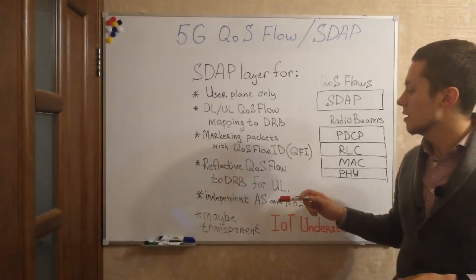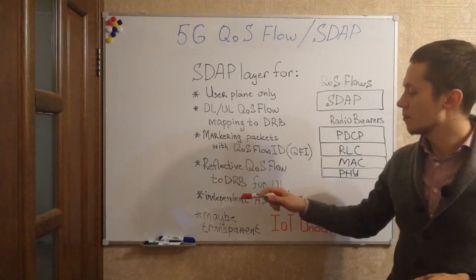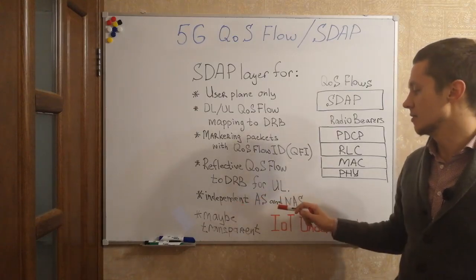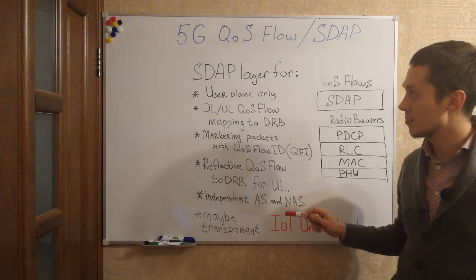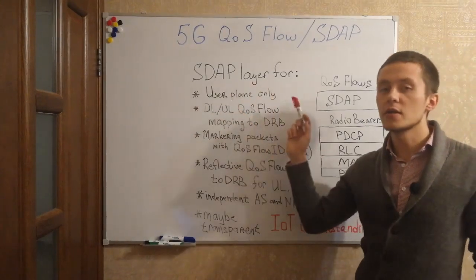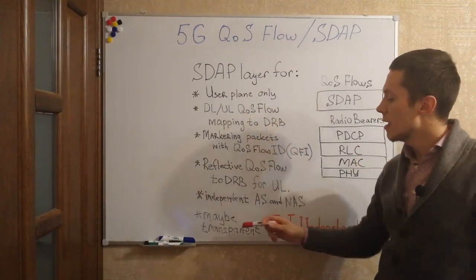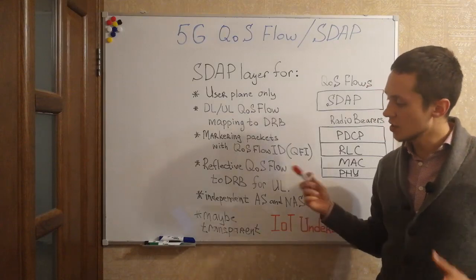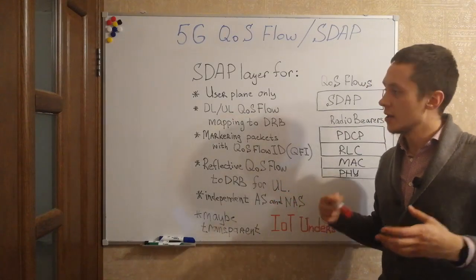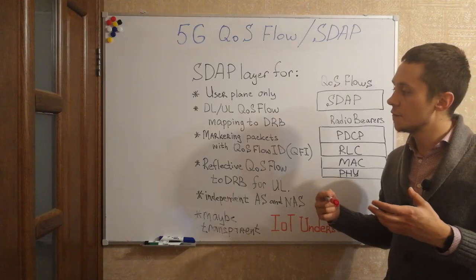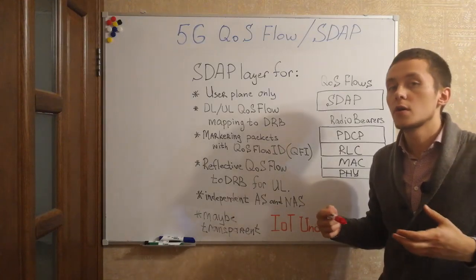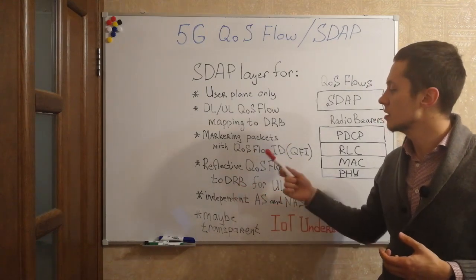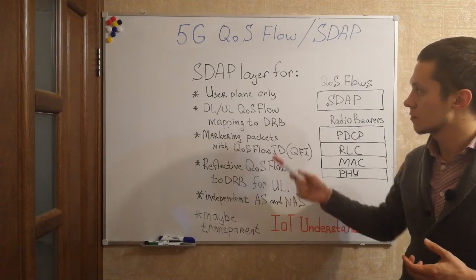Apart from this, SDAP layer and reflective quality of service may work independently for access stratum and non-access stratum. The whole header of this layer may be transparent, but in cases where we have two or more QoS flows mapping to data radio bearers, we need to have the SDAP layer.